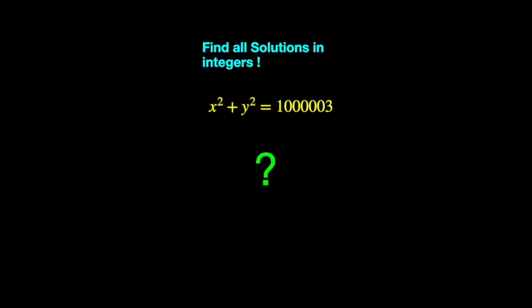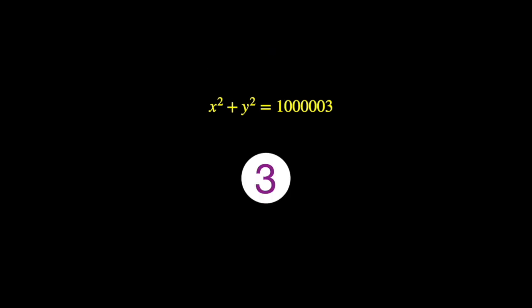Can you write a million and three as the sum of two squares? I'll solve this problem in 3, 2, 1.